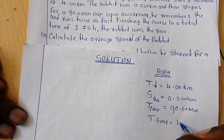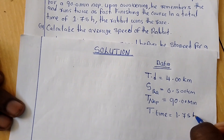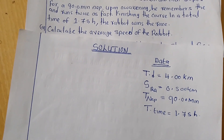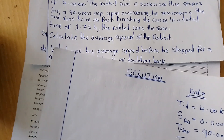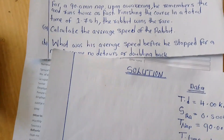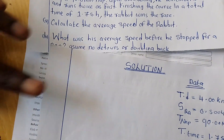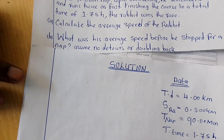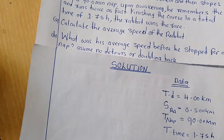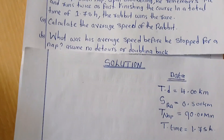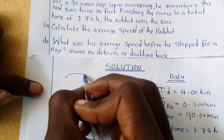And they are saying that the total time is 1.75 hours. The question is: calculate the average speed of the rabbit. Now, what do we do? We first draw a diagram. It is very important for you to draw the diagram in physics because the diagram will make everything simple and easier for you. So we are going to draw this particular entity.